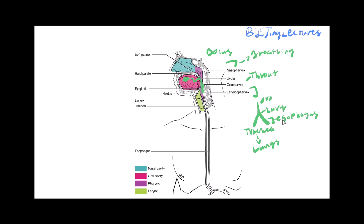To prevent food and water from entering the trachea, we have the epiglottis in this region. When the uvula — the little bell-shaped piece of meat in your mouth — senses food or water, it contracts and sends a signal to the glottis to close, blocking the trachea. Now the food only has one way to go: into the esophagus. When we're breathing, the glottis is open because there's no food or water, and air goes through the nasopharynx into the trachea.